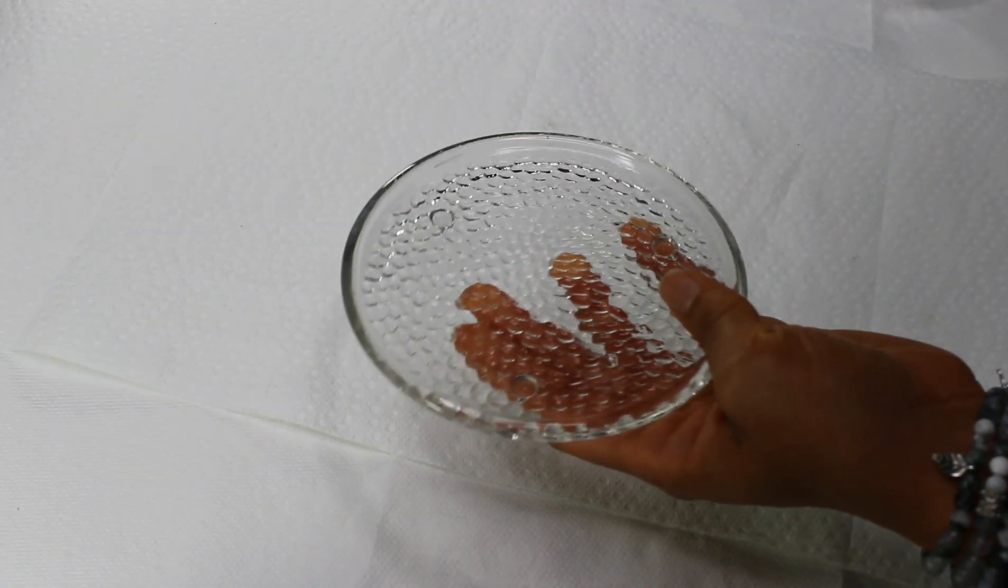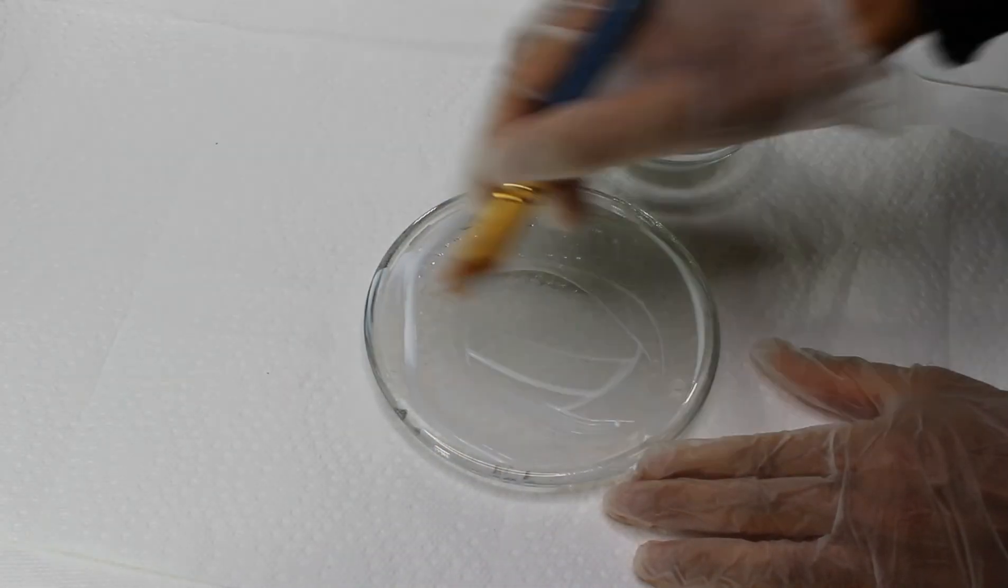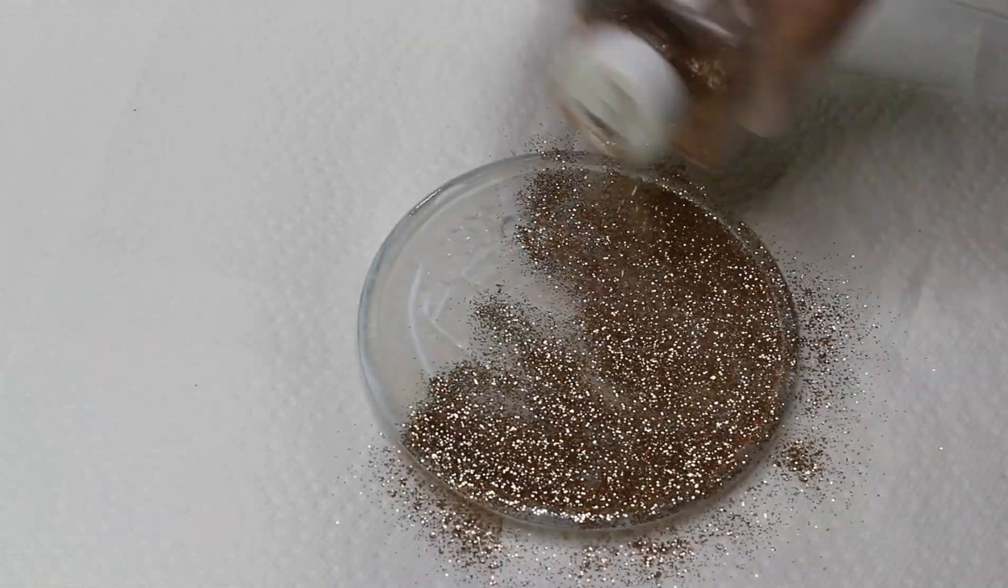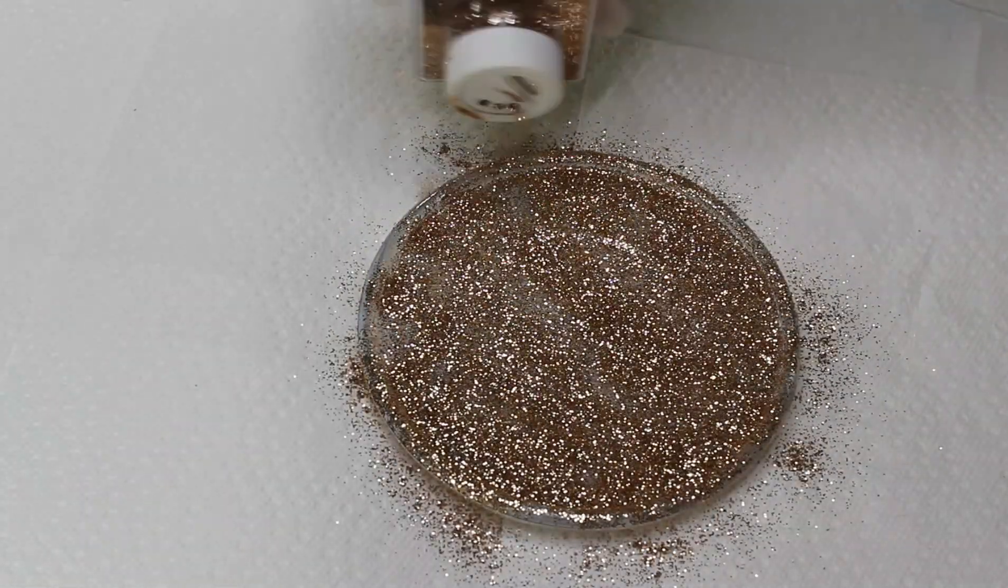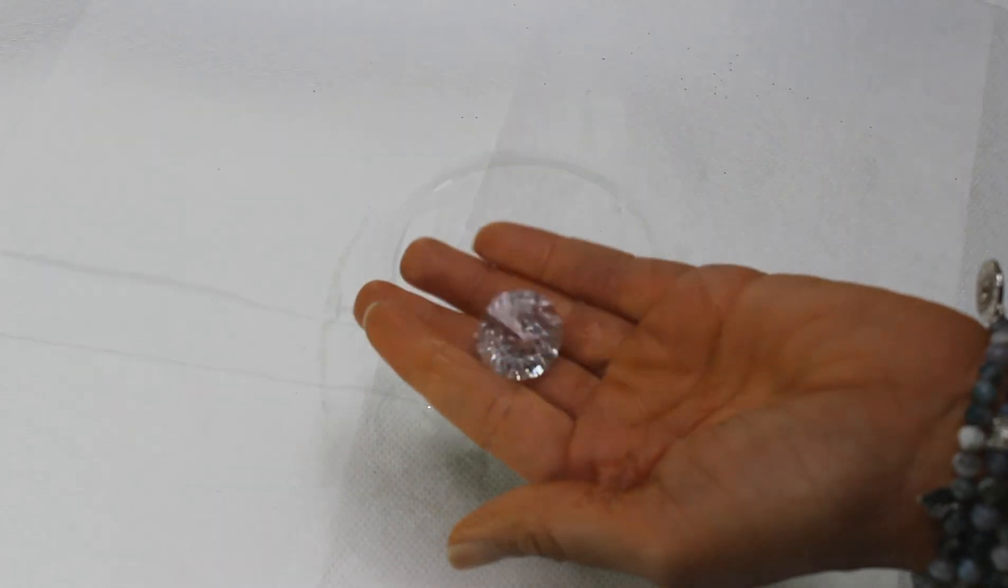Next I'm going to take this glass candle plate from Dollar Tree and I'm going to use Mod Podge and some fine glitter in the color gold. I'll be using this glam gem that I already had.